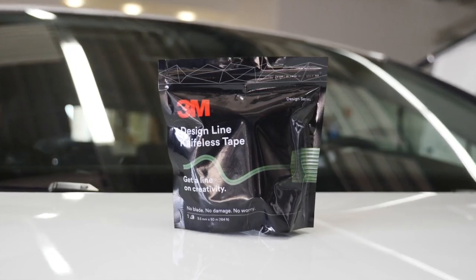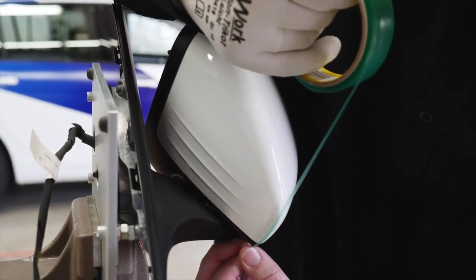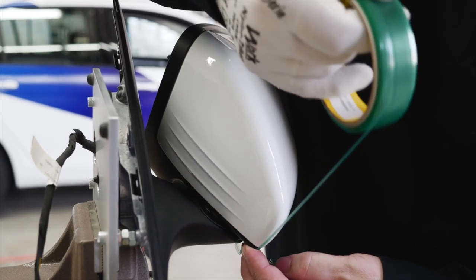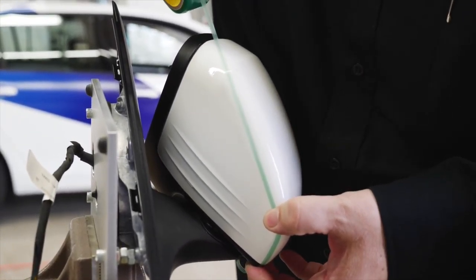After cleaning the mirror, use 3M Knifeless Tape Design Line to set the cut line for the first piece of film that is applied on the vertical undercut part of the mirror. Secure the knifeless tape to ensure good adhesion to the substrate.